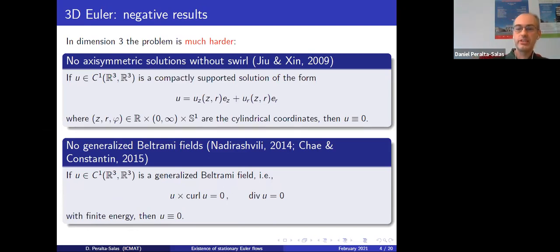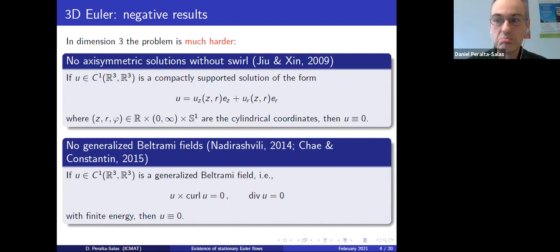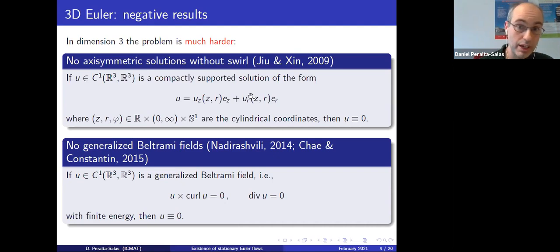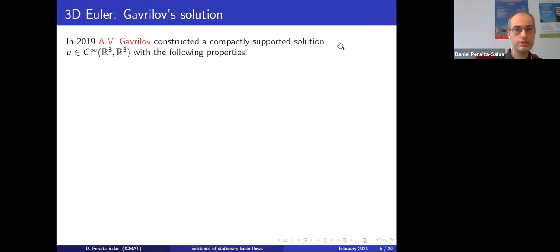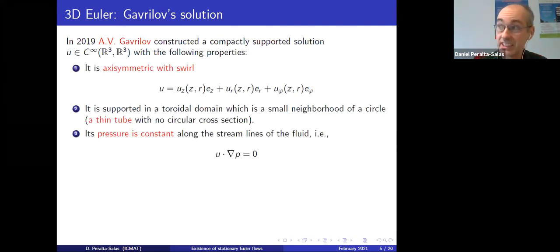These negative results suggested the conjecture that there don't exist smooth enough stationary solutions of the Euler equations with compact support — general stationary solutions, not only the special types considered above. Several people believed and tried to prove this for some time. The surprise came a couple of years ago when Gabrilov constructed a compactly supported C^∞ solution of the Euler equations.